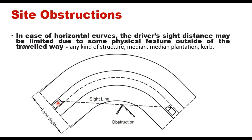On a two-lane road with a vehicle coming in the opposite direction, the line of sight may be obstructed by features between them. This obstruction can be a building, a structure, and even in the case of a multi-lane highway it can be the median, plantation in the median, or even the curve itself.